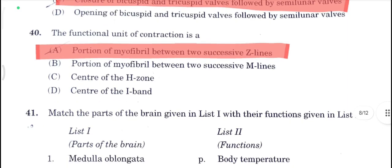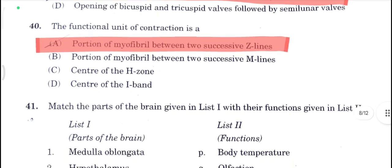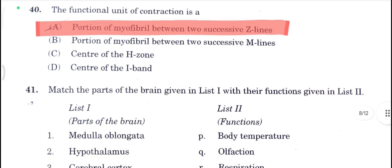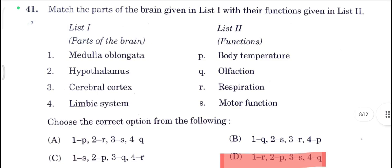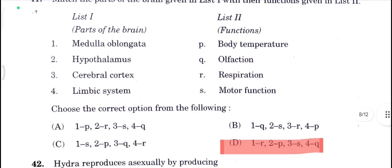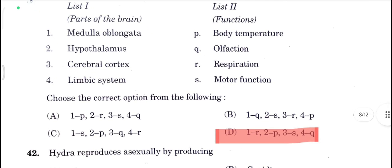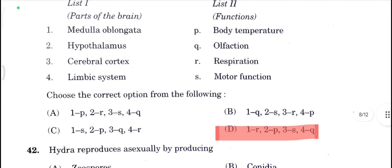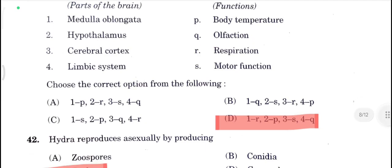The functional unit of contraction is the portion of myofibril between two successive Z lines — A is your correct answer. Next, respiration goes to R. Hypothalamus goes to P — that is body temperature. So D is your correct answer.